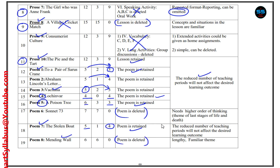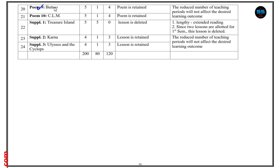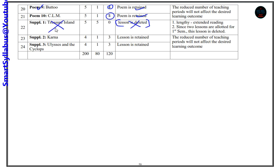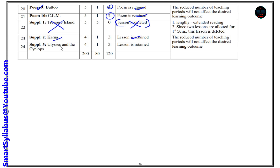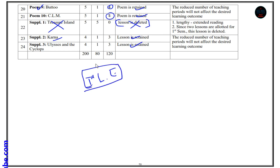If the explanation is going fast, pause the video, mark these topics, then continue. Poem 9 — 'Put Two' — is retained. Poem 10 — 'CLM' — retained with reduced periods. For supplementary reading: Supplementary Reading 1 — 'Treasure Island' — is completely deleted because it is very lengthy and two lessons are allotted for it. Supplementary Reading 2 — 'Karna' — is retained. Supplementary Reading 3 — 'The Glasses and the Cyclops' — is also retained. So these are all the changes in your First Language English.